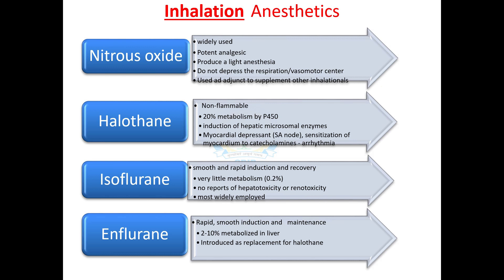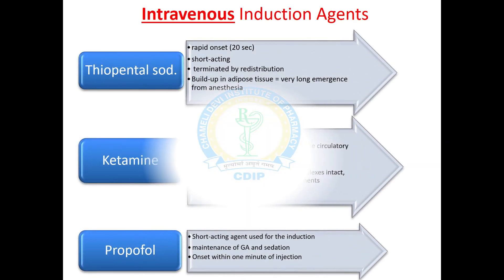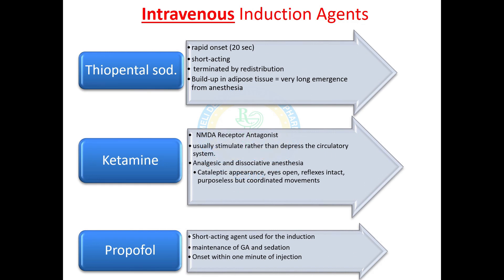Enflurane is also a rapid, smooth induction and maintenance agent. Intravenous induction agents include thiopental sodium, ketamine, and propofol. Thiopental has a rapid onset of action of around 20 seconds and a short duration of action of around 10 minutes. Its effect is terminated in the body by redistribution, not by metabolism. Ketamine is an NMDA receptor antagonist — a glutamate-type receptor — and it stimulates the circulatory system. It is both analgesic and a dissociative anaesthetic agent. Propofol is a short-acting agent used for induction of general anaesthesia, and sometimes for maintenance. Its onset of action is approximately one minute after injection.